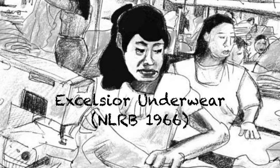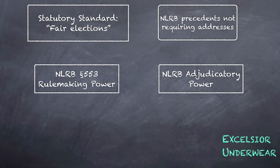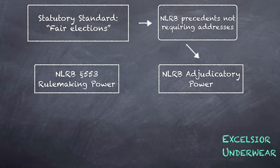The union lost the election and challenged the result. In its published opinion, the NLRB noted that its precedents applying the statutory standard did not require employers to disclose addresses. Like a common law court, the board viewed this body of precedent as presumptively binding, but it did not regard its precedents as conclusive for all time. It announced that no later than seven days from the date of its order, it would require employers to furnish a list of addresses with names.